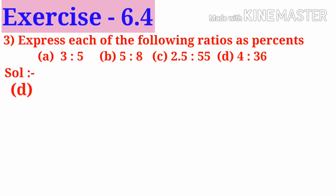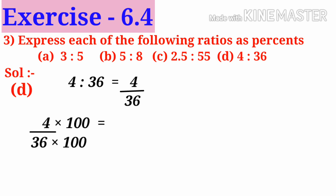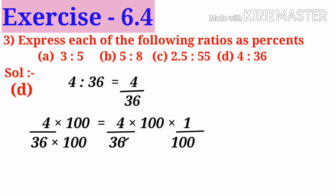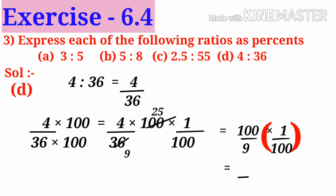D: 4 is to 36 can be written as 4 by 36. Now multiply both numerator and denominator by 100, that is 4 by 36 into 100 into 1 by 100. On simplification by 4, 25 into 4 is 100 by 9 into 1 by 100. Since 1 by 100 is replaced by the percent symbol, the answer is 100 by 9 percent.